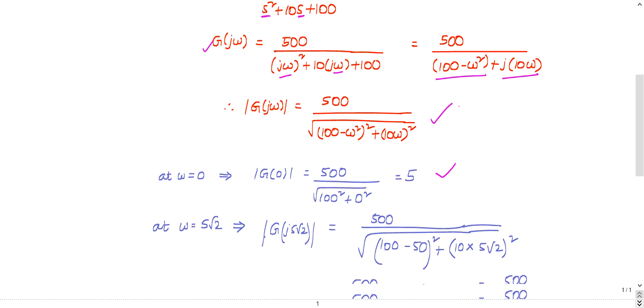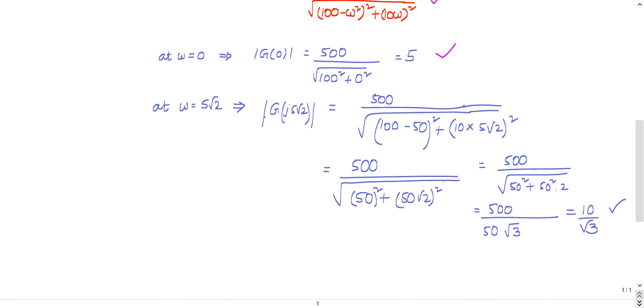He framed options in such a way that you definitely have to check the second frequency also. The second frequency is given as 5 root 2. At 5 root 2, what is happening?